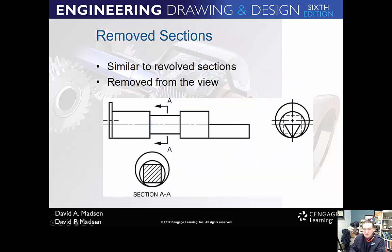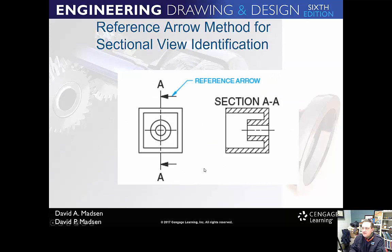Removed sections: you'll have a drawing with multiple removed sections — for example, section A-A and section B-B placed in different locations. There's also a reference arrow method for sectional views, which I think looks goofy. I want you to use the standard method we've been doing, not the reference arrow method.